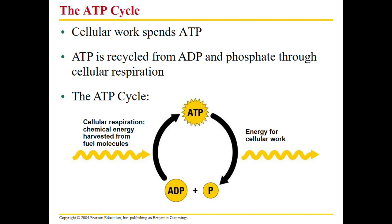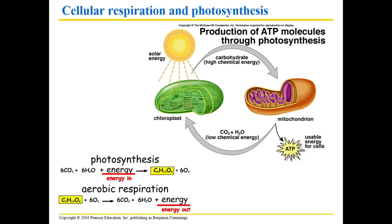This is a cycle: ATP is broken down to release energy, giving ADP plus phosphate, then built back up again in the mitochondria from fuel molecules. This ATP cycle is completed at the chloroplasts and mitochondria. Chloroplasts in plants make the sugars, and mitochondria break those down to make ATP that cells can use.